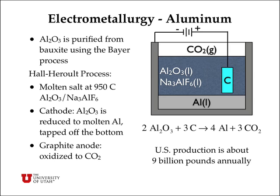On a much grander scale, we can make aluminum from aluminum oxide. Aluminum oxide is purified from the ore, which is called bauxite, using something called the Bayer process. Hall and Héroult invented a way of electrochemically converting the aluminum oxide to molten aluminum. In this device, at the cathode, aluminum oxide is reduced to molten aluminum, and that sinks to the bottom where it's tapped off.